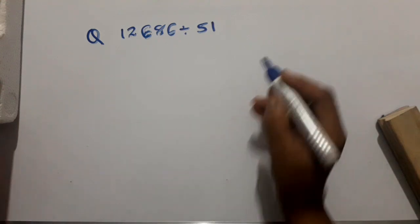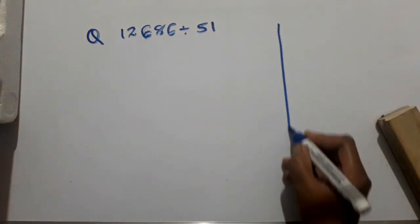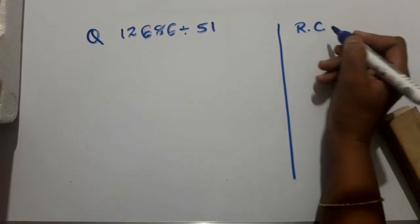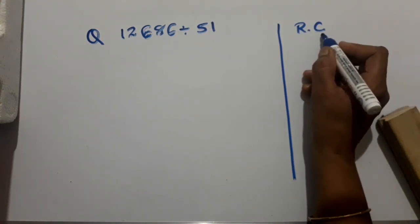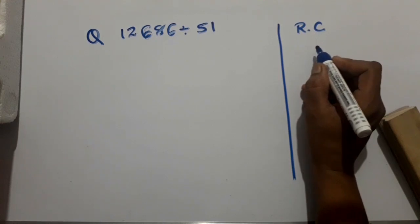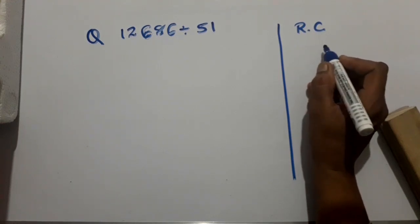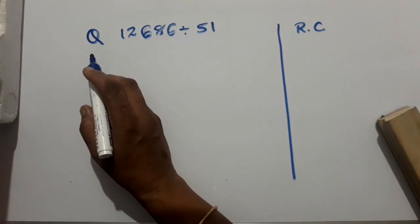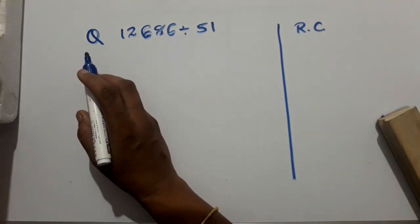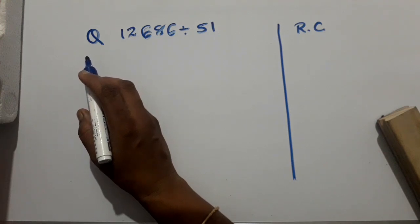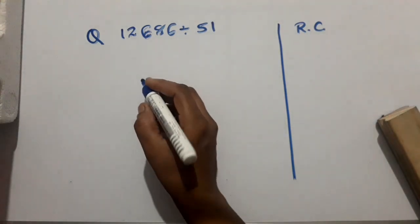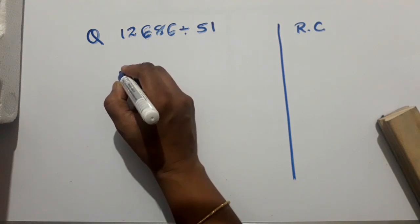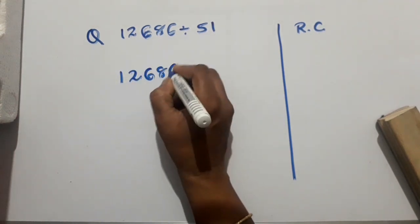Whenever you perform a division question, first make a rough column on the right side and write RC. This is where you do all the rough calculations and also leave space for the teacher to give marks. Now let us start with the question: 12,686 divided by 51.